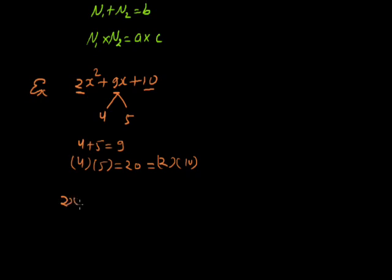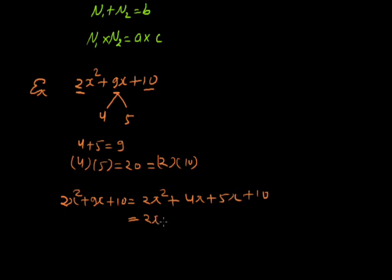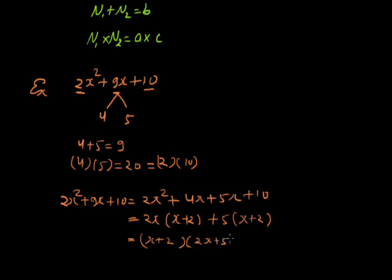So 2x squared plus 9x plus 10 can be written as 2x squared plus 4x plus 5x plus 10. From the first two terms, we take 2x common, leaving x plus 2. From the next two terms, we take 5 common, leaving x plus 2. Now x plus 2 is common in both terms, so we take x plus 2 common, leaving 2x plus 5. So the factorization is x plus 2 into 2x plus 5.